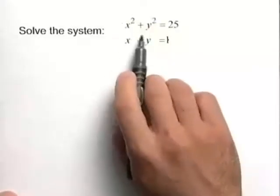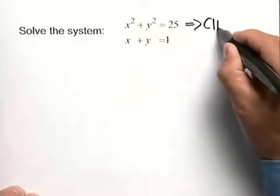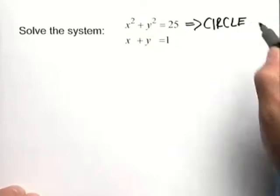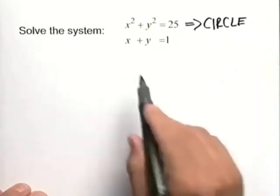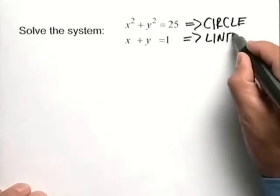Let's solve a little more involved system. We have x squared plus y squared equals 25, and you'll recognize this as being a circle with a radius 5 centered at the origin. We also have the equation x plus y equals 1, and this is a line.